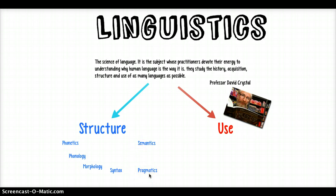Pragmatics looks at meanings that aren't present but are somehow indicated by a syntactic arrangement. If you've ever said to somebody 'are you putting the kettle on?' and really meant 'will you make me a cup of tea?' — that's a kind of pragmatic usage.